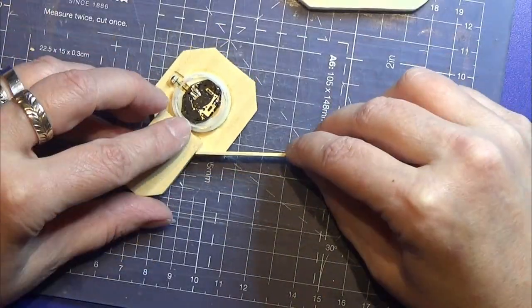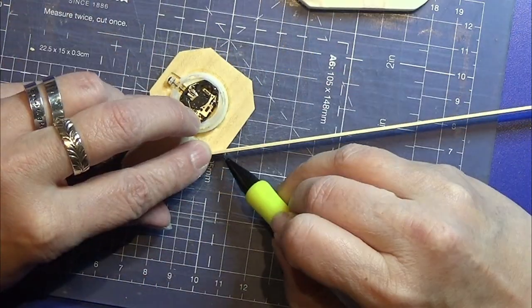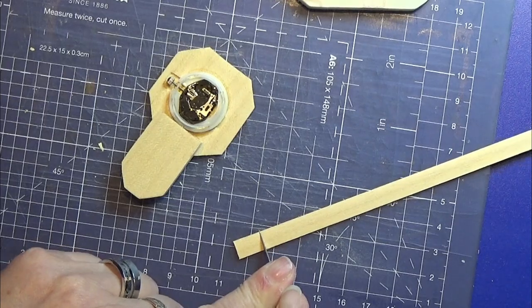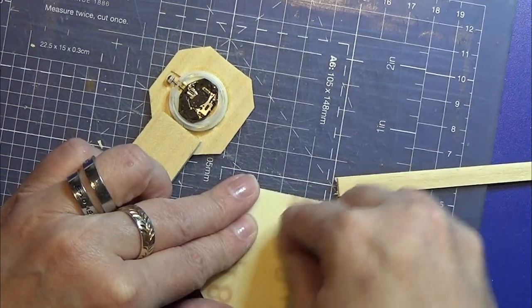Now I'm using the big strip of wood and I'm going to make this border or edge around the top piece of the clock. Take your time to do this because it will be worth it in the end.